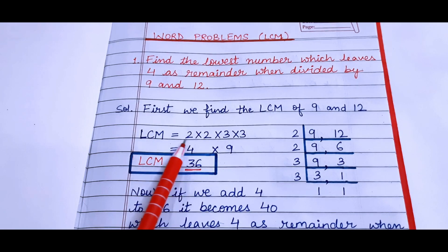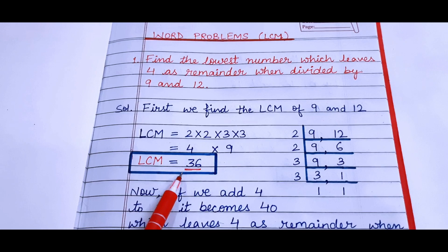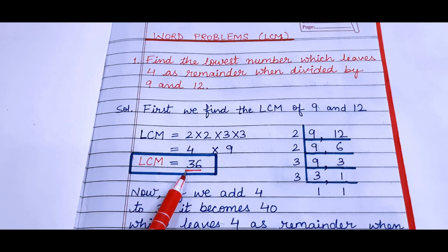Now solve it. 2 twos are 4, 3 threes are 9, 4 nines are 36. So the LCM is 36.